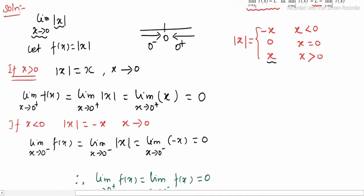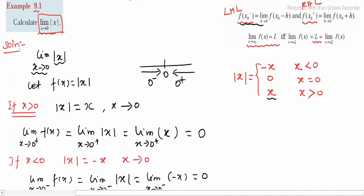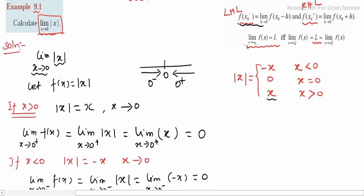So once again, we repeat the concept: the left-hand limit equals the right-hand limit — both equal the same value, 0. And the function value also equals the same value. So the limit exists.